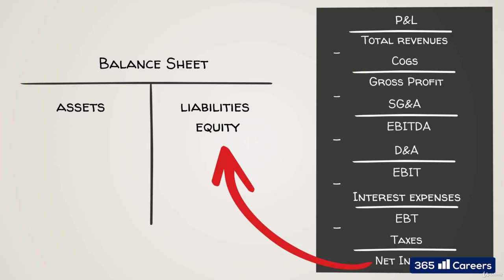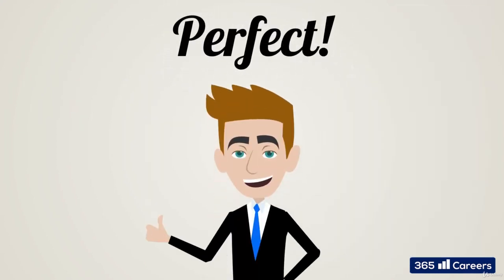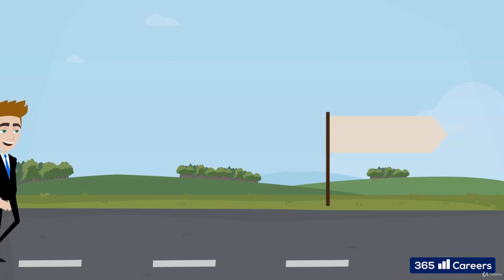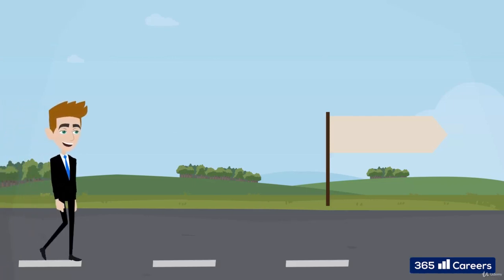All the profits made by the company are directly added here. And if the company produces losses, then they decrease this amount. These are some of the most frequently seen balance sheet items.